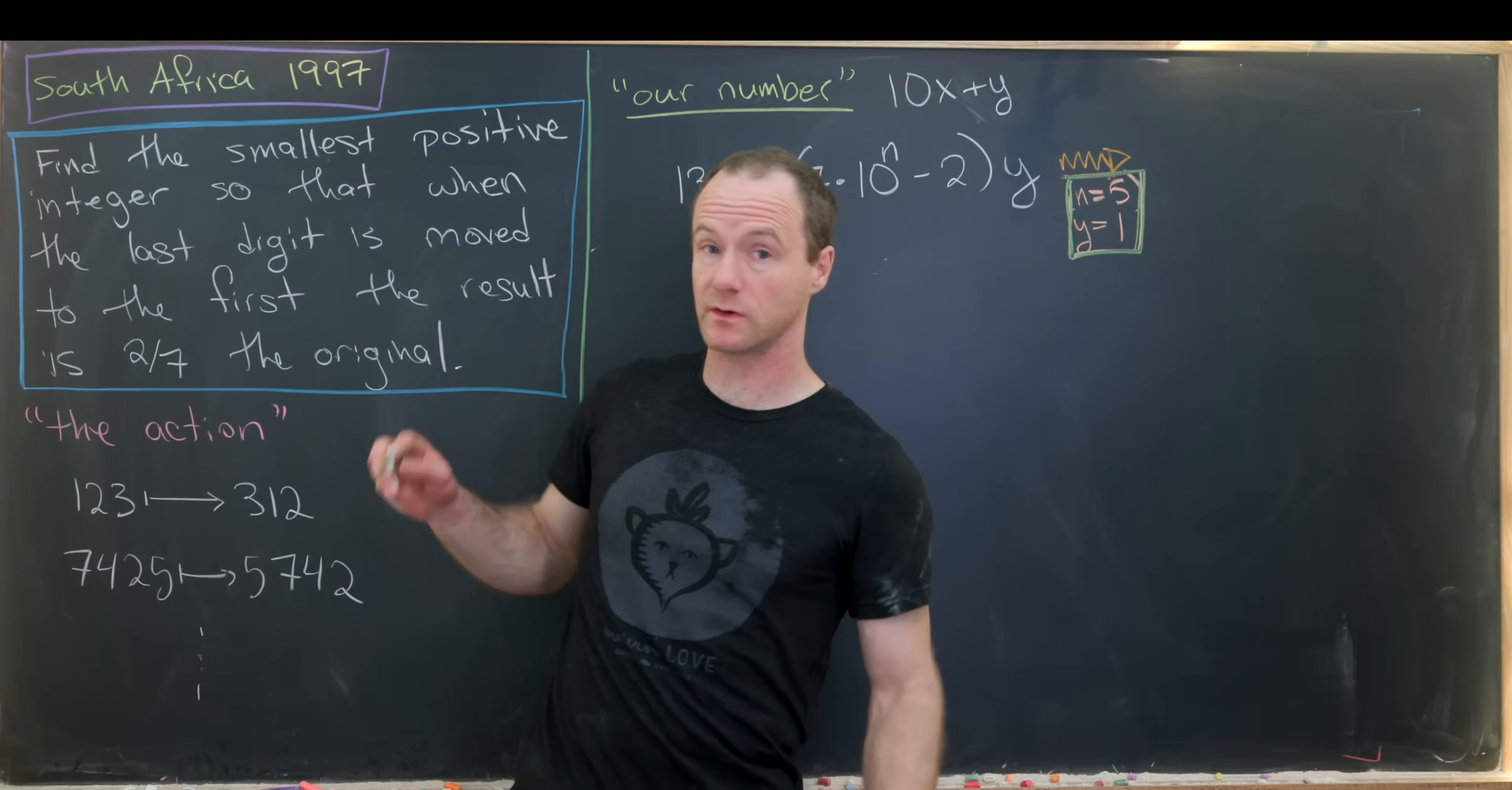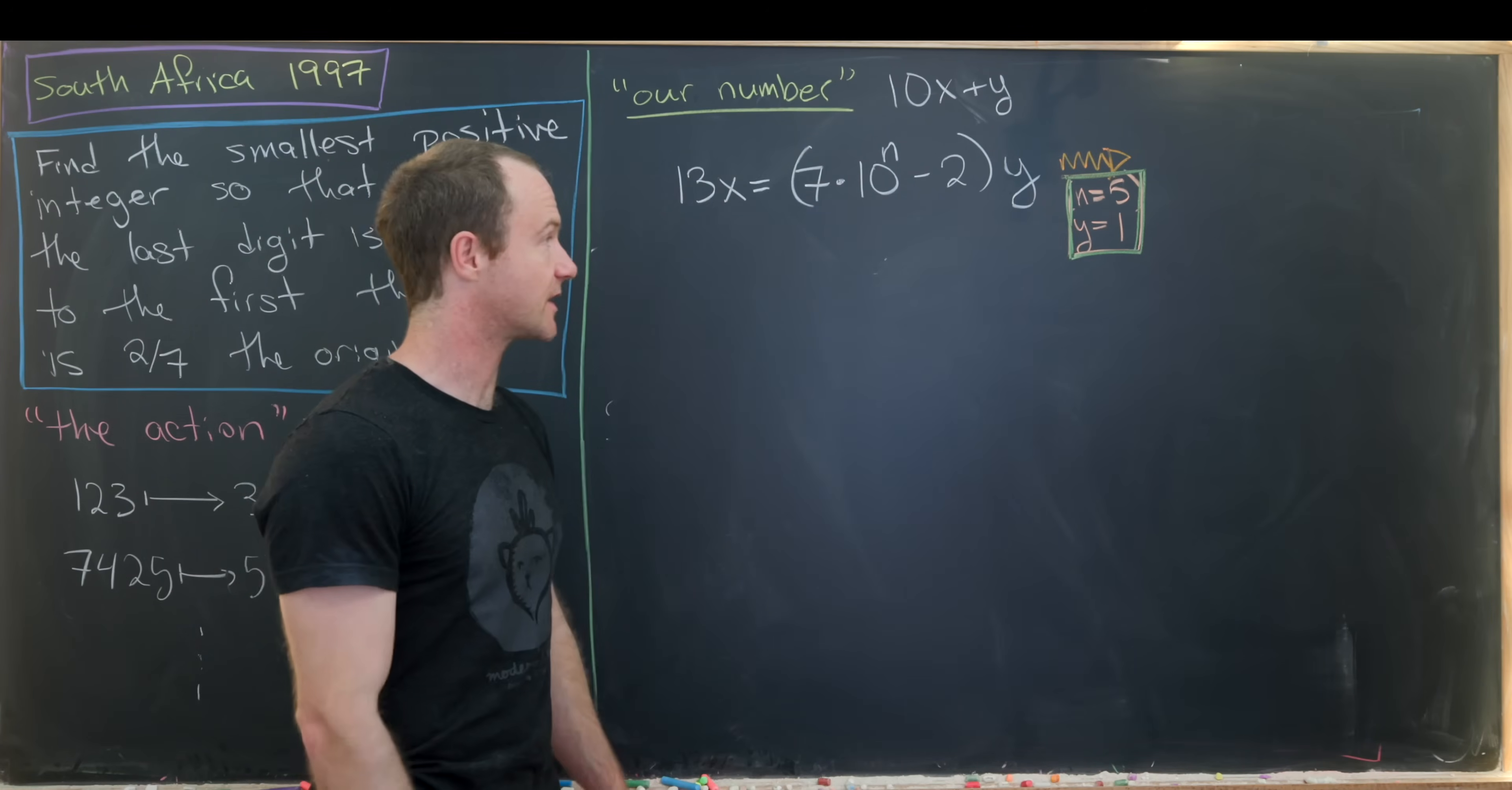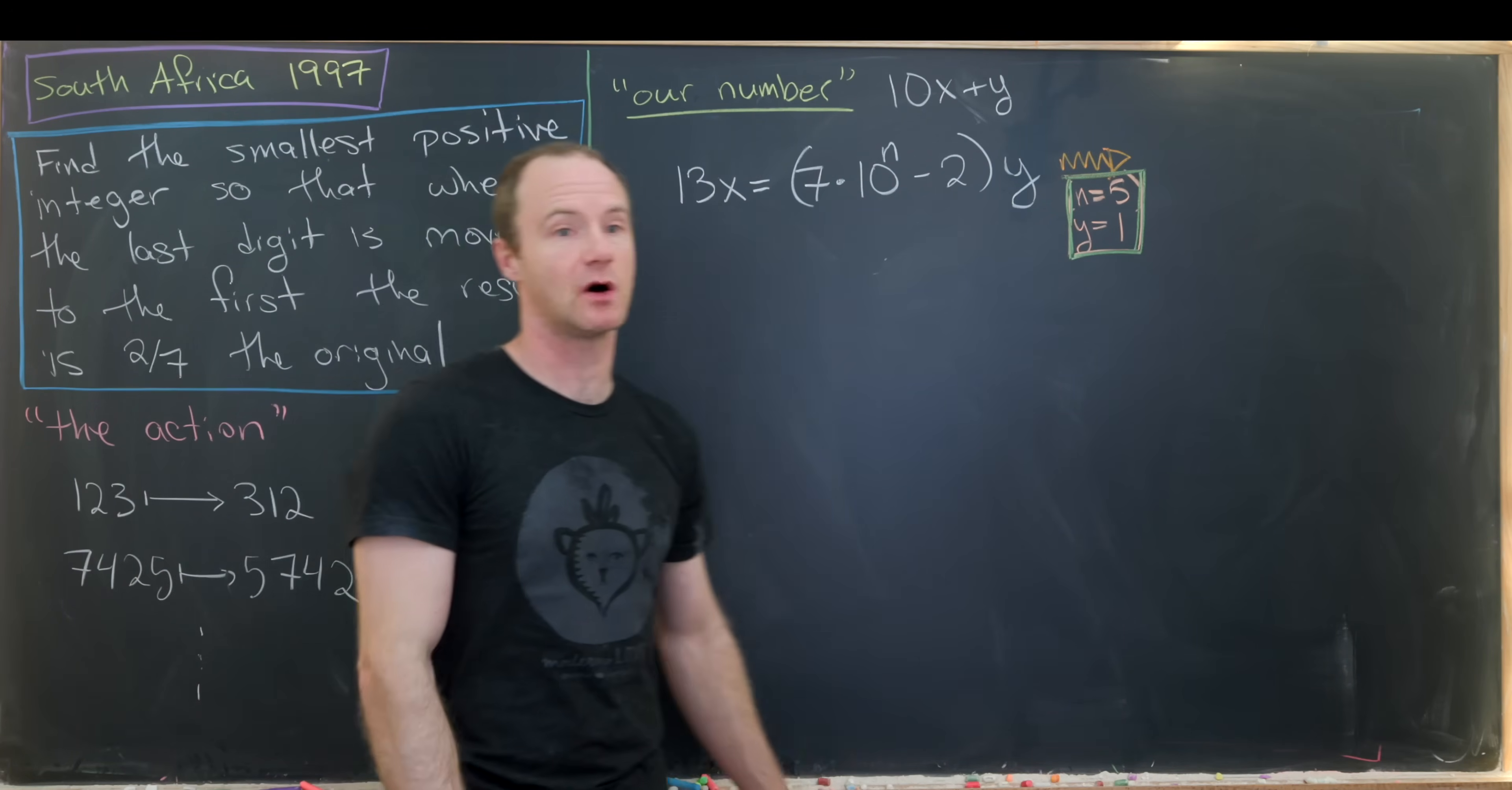So on the last board, we wrote our number. So the number that satisfies this sentence right here could be written of the form 10x plus y, where x was between something like 0 and 10 to the n minus 1, and y was between 0 and 9. I guess I should say that at this point, we see that y must at least be equal to 1. Otherwise, x will be equal to 0. And the whole thing will be equal to 0. And we're looking for a positive integer here. Furthermore, we were able to write 13x as 7 times 10 to the n minus 2 times y. And we argued that n was of the form 6m plus 5. And we should probably try the case when n is equal to 5, because we want to achieve this smallest condition over here. Furthermore, we should probably try the case when y is equal to 1, again, because we're trying to satisfy this smallest condition over here.